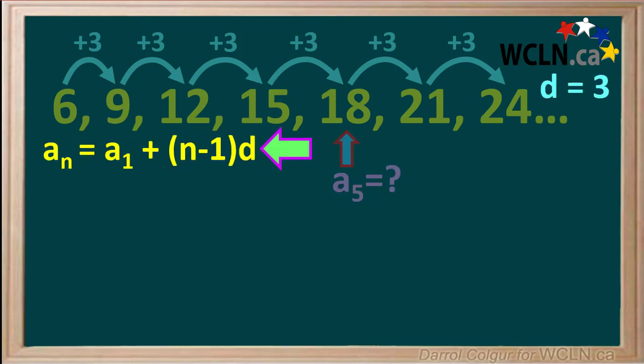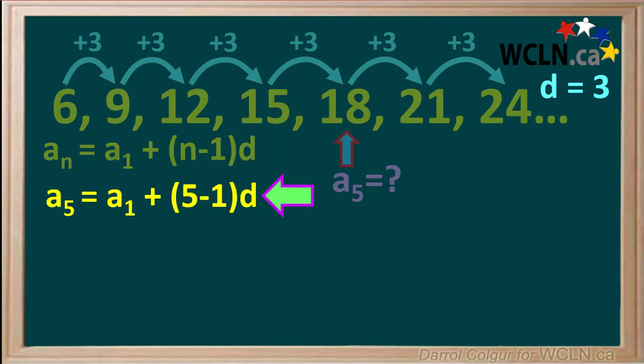Here's the equation: an equals a1 plus (n minus 1)d. We're looking for term 5, so we'll replace both n's by 5, giving us a5 equals a1 plus (5 minus 1)d.